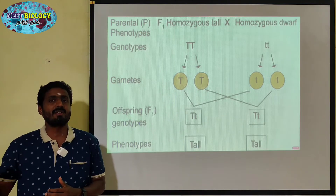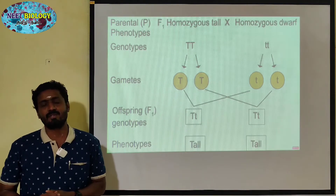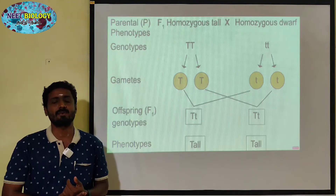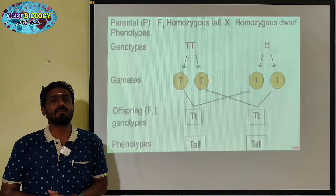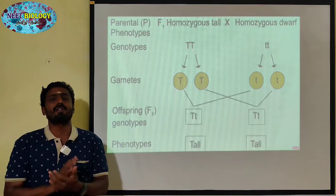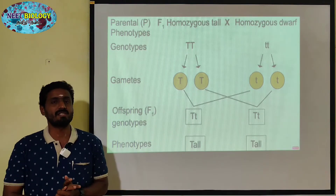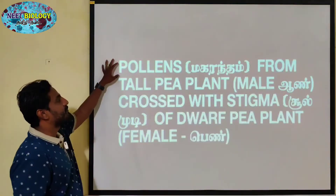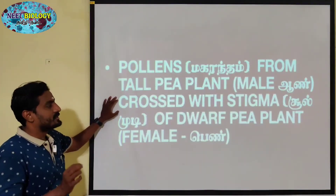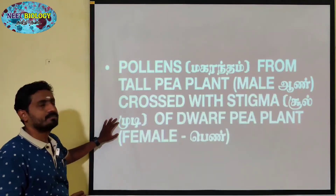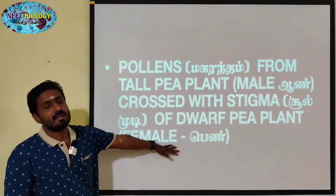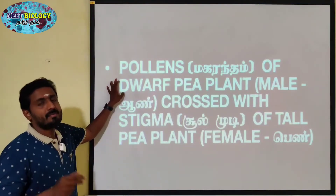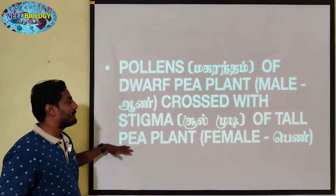In the reciprocal cross, the dwarf plant is considered as the male and the tall plant as the female. Pollen from the tall pea plant is crossed with the stigma of the dwarf pea plant. Then, pollen of the dwarf pea plant is crossed with the stigma of the tall pea plant.